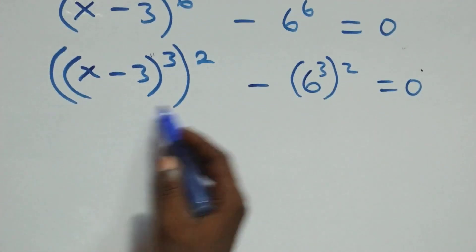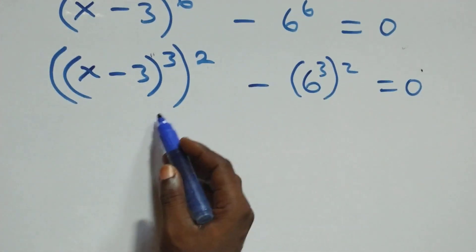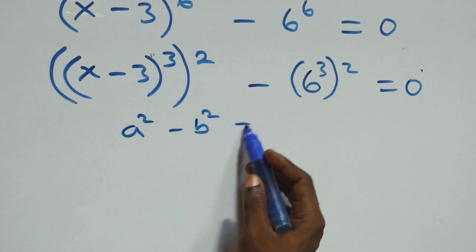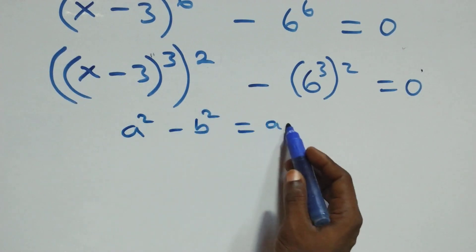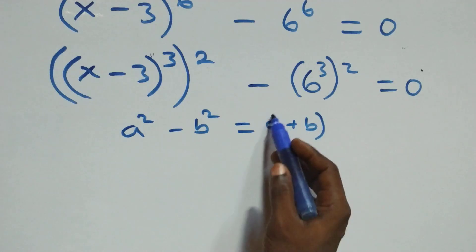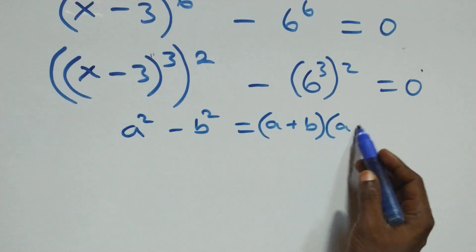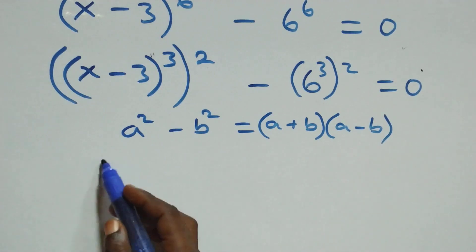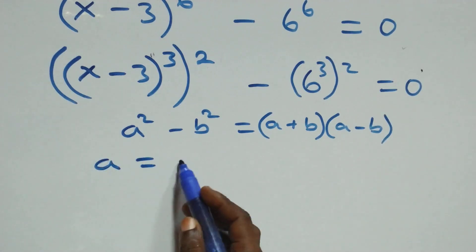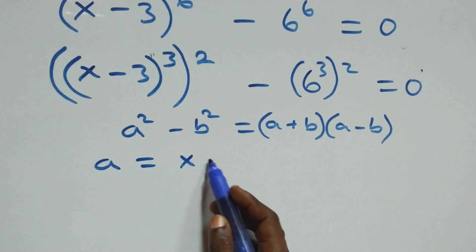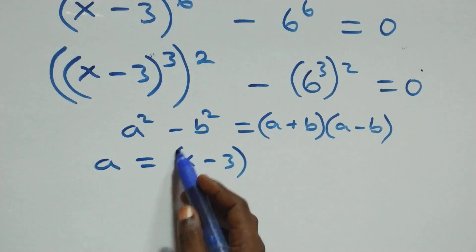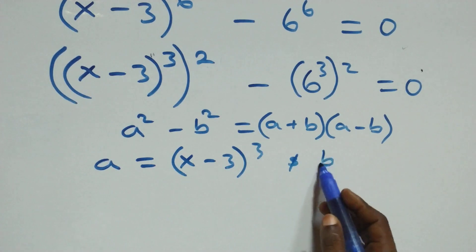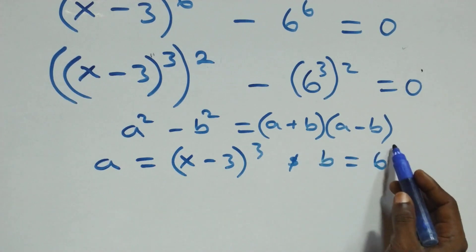This follows from the difference of two squares: a squared minus b squared equals (a plus b)(a minus b). Here, a is standing as (x minus 3) raised to the power 3, and b is standing as 6 raised to the power 3.